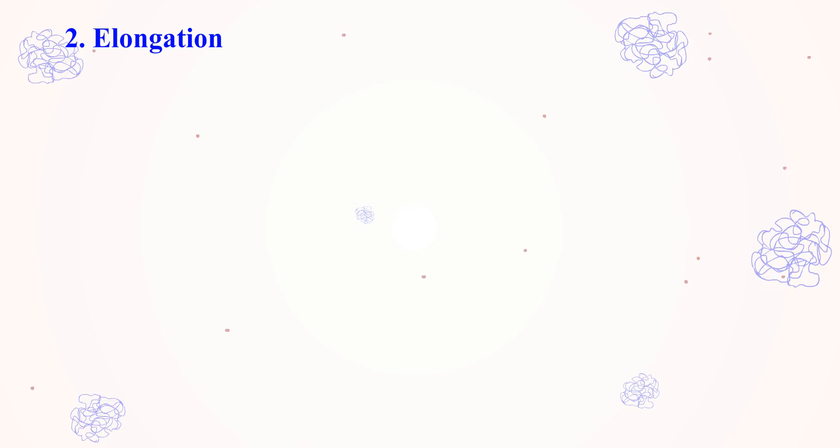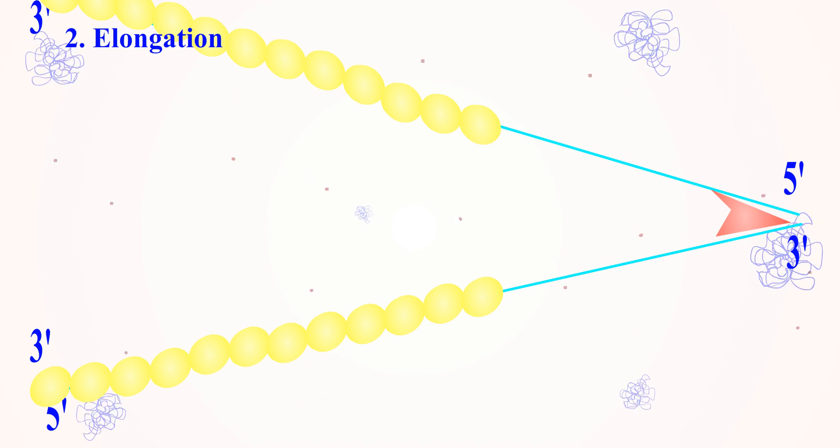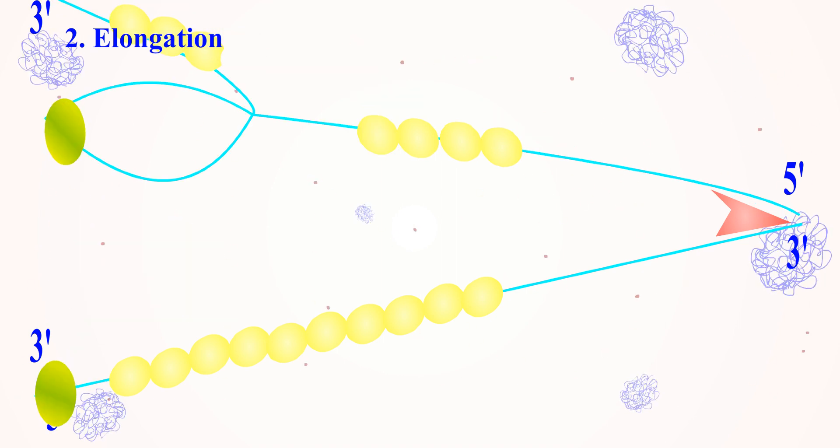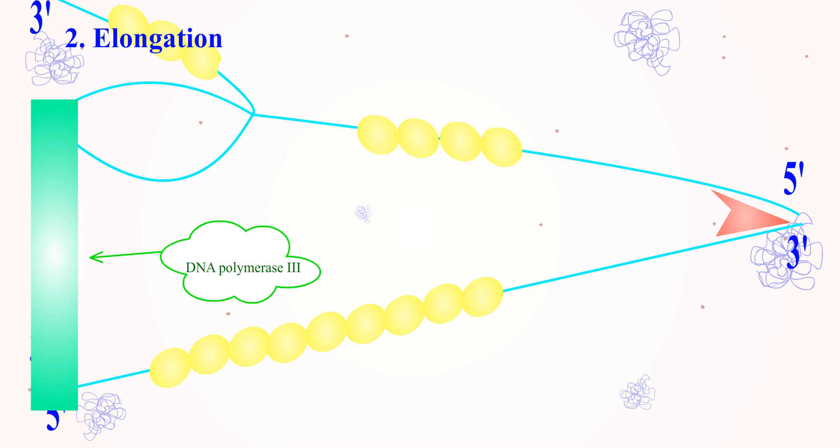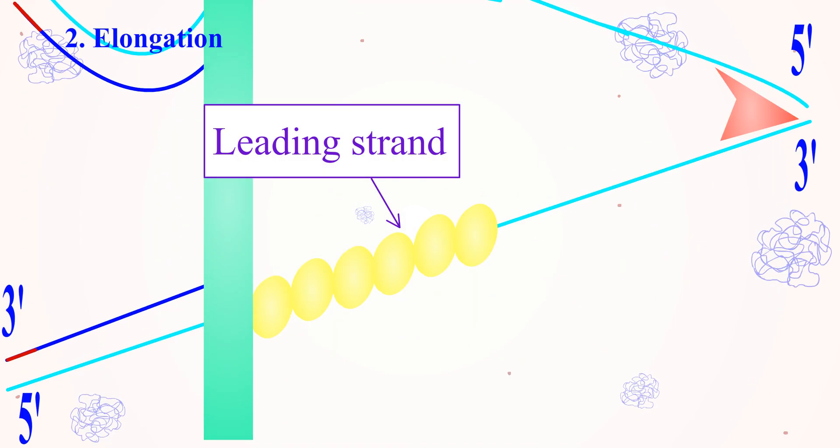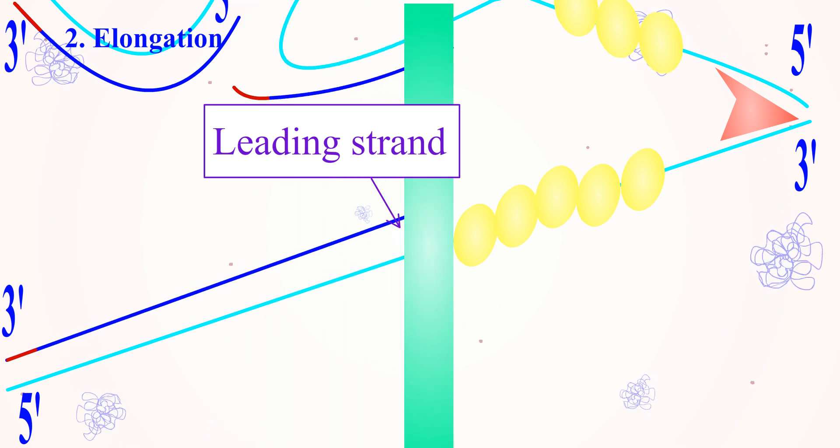The second step of replication is elongation. DNA primer will bind to DNA at the replication fork to provide a starting point for DNA synthesis. DNA polymerase 3 will start synthesizing the complementary DNA sequence in accordance with the sequence of parent DNA in a unidirectional manner, in the 5 prime to 3 prime direction.